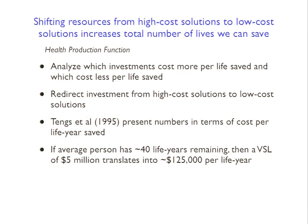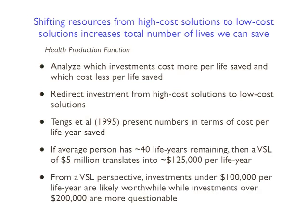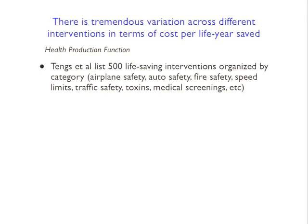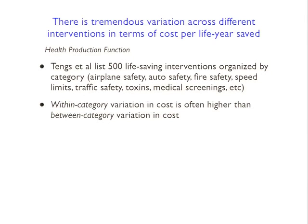From a VSL perspective, a $5M VSL with 40 years remaining translates to $125,000 per life-year saved. Investments costing around $100,000 per life-year or less are probably worthwhile, whereas investments over $200,000 per life-year are more questionable since the benefit is substantially less than the cost. Looking through the tables in that paper, the thing that really stands out is tremendous variation across different types of interventions. The paper covers maybe 500 life-saving interventions organized by category - airplane safety, auto safety, fire safety, speed limits, reducing toxin exposure, medical expenditures, and so forth. A dominant theme is that within-category variation is often higher than between-category variation.